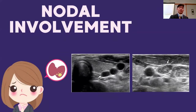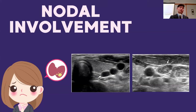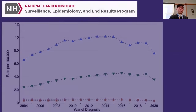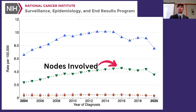Nodal involvement is quite easy to detect on ultrasound. The lymph nodes themselves appear like black or gray ovals. It takes an experienced ultrasonographer to know when something is just reacting, because many things can cause lymph nodes to enlarge — including allergies, vaccines, colds, and skin lesions — but there's a particular appearance that we worry about for nodal metastasis from thyroid cancer. This actually happens quite often: SEER data shows that when people are diagnosed with thyroid cancer, approximately one-third, about 30%, present with nodes already present. This has been true from 2004 to 2020.